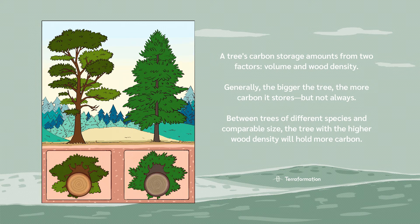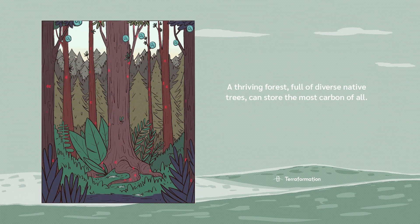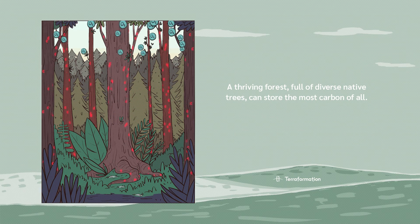A tree's carbon storage depends on two factors: volume and wood density. Generally, the bigger the tree, the more carbon it stores — but not always. Between trees of different species and comparable size, the tree with a higher wood density will hold more carbon. A thriving forest full of diverse native trees can store the most carbon of all.